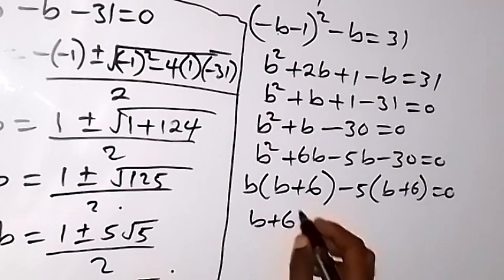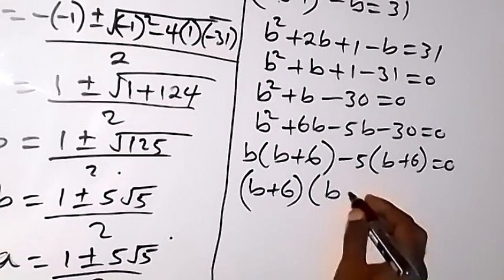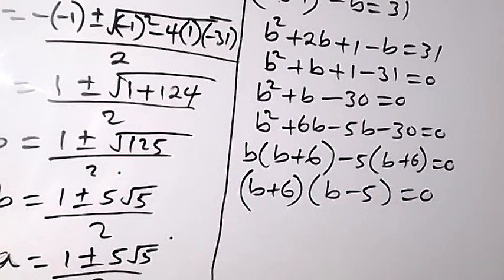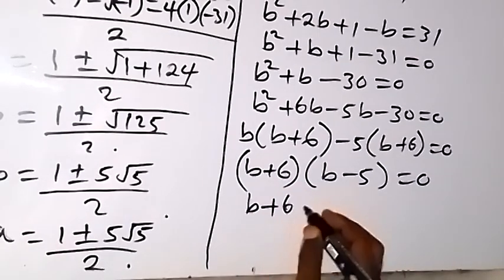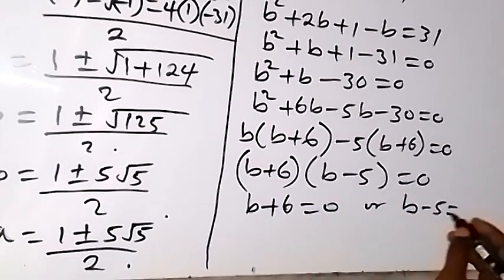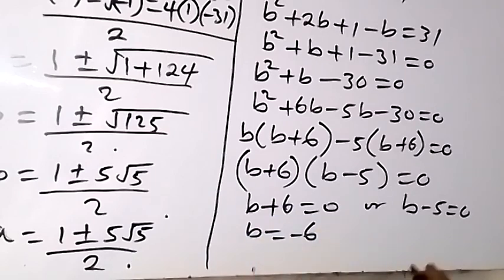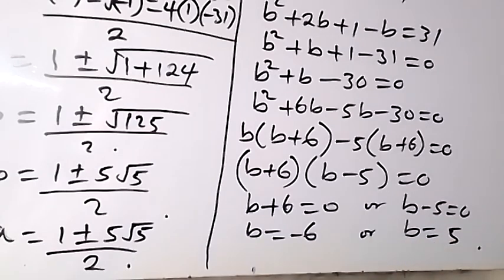Grouping: b(b + 6) minus 5(b + 6) equals 0, so (b + 6)(b − 5) equals 0. Therefore b equals −6 or b equals 5.